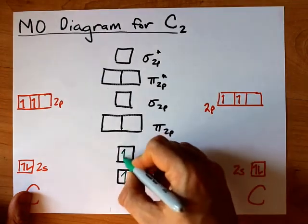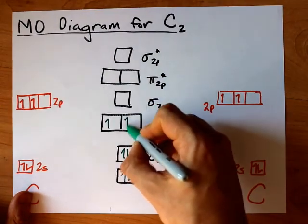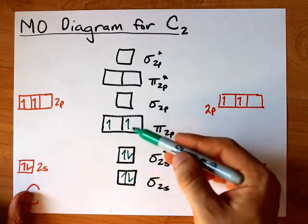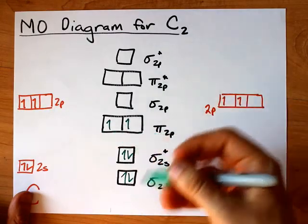One, two, three, four, five, six. Have you noticed I'm going bottom up and spreading them out before I double them up? That's the Aufbau Principle and Hund's Rule.